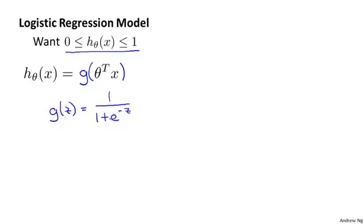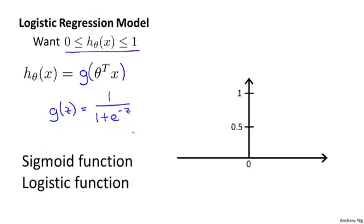This is called the sigmoid function or the logistic function. The term logistic function is what gives rise to the name logistic regression. The terms sigmoid function and logistic function are basically synonyms and mean the same thing, so the two terms are interchangeable and either term can be used to refer to this function g.